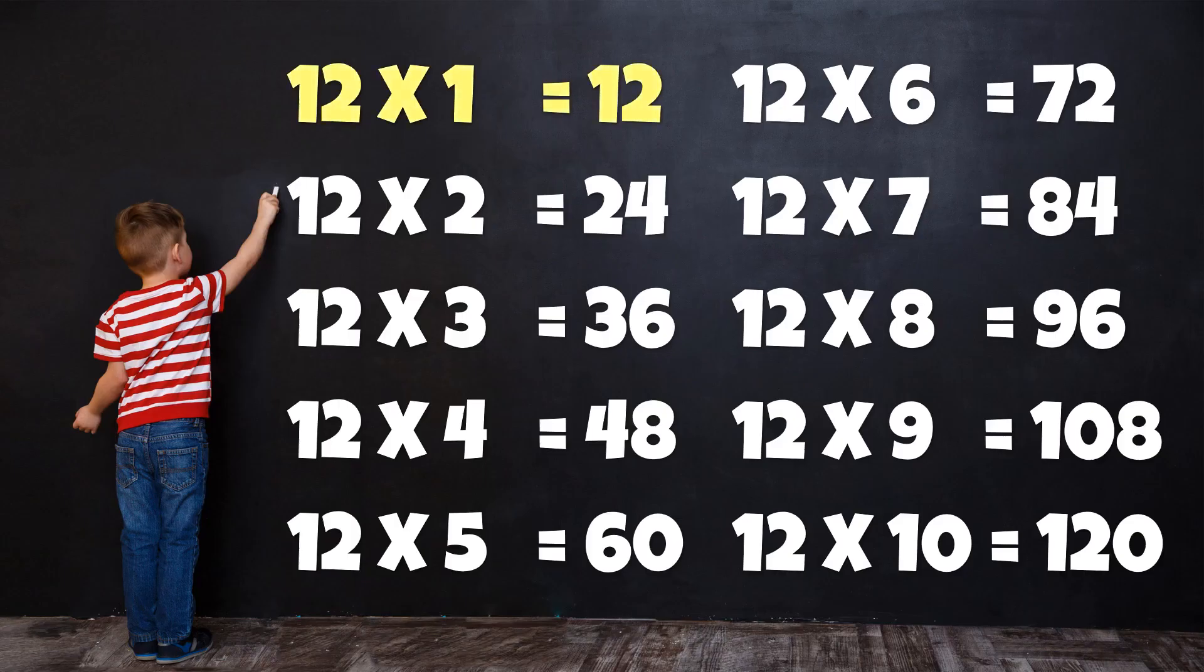Table of 12: 12 1s are 12, 12 2s are 24, 12 3s are 36, 12 4s are 48.